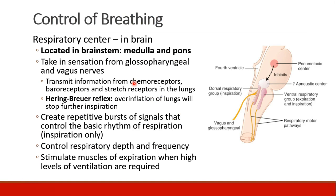I'd like to talk briefly about control of breathing. Our brain has a respiratory center located in the brain stem — in the medulla and in the pons. Breathing is interesting because it's one of those functions that we can completely control voluntarily or completely involuntarily. The involuntary center is here in the brain stem. It takes in sensation from the glossopharyngeal and vagus nerves, which transmit information from chemoreceptors, baroreceptors, and stretch receptors in the lungs.